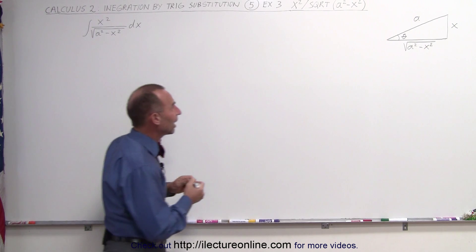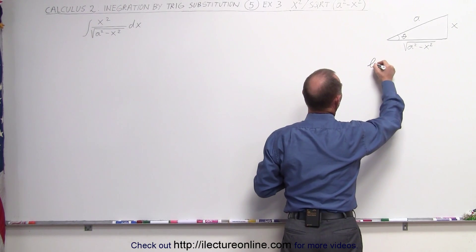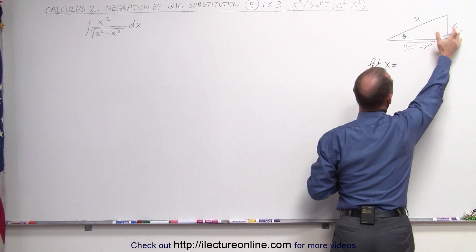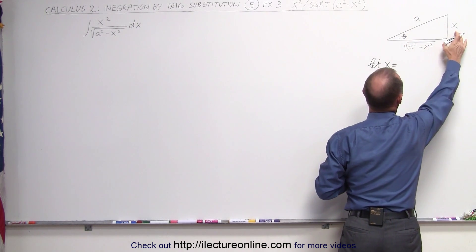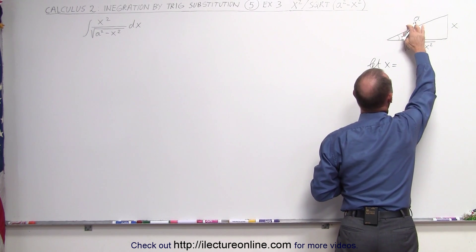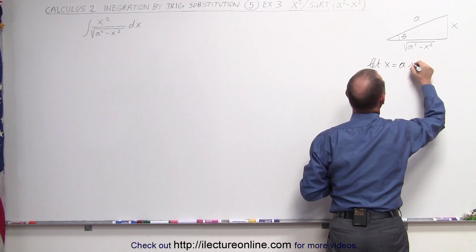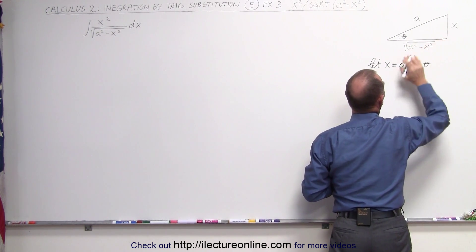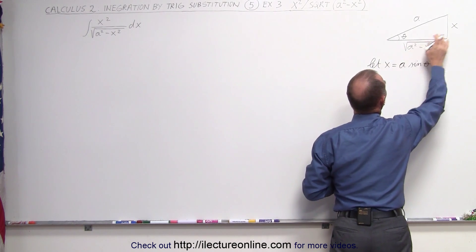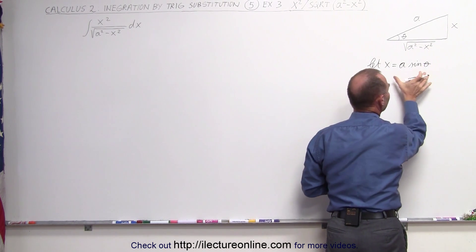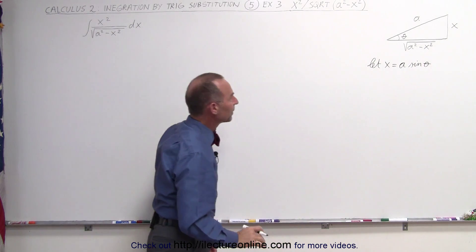To do that, we let x equal — and in this particular triangle, notice it's the opposite side to the angle, and this is the hypotenuse — so it would be a times the sine of theta. The sine of theta is the relationship between x over a, so we have x over a equals sine theta. That's where the relationship comes from.